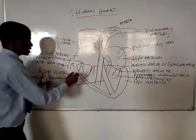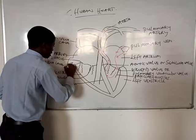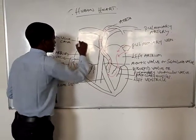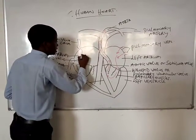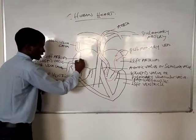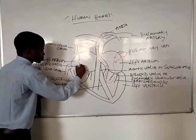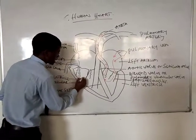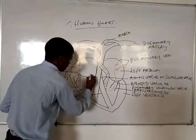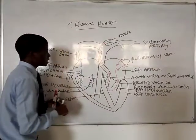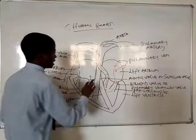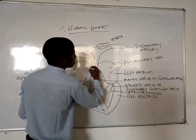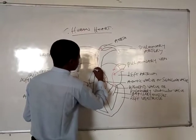Now let's come to this. The oxygenated blood comes this side, and here the oxygenated blood from the upper side came into the heart, and it enters the heart through the valve. From this valve it again comes to the next valve, and this blood is again being sent directly to the pulmonary artery for purification.